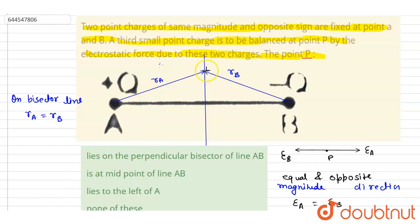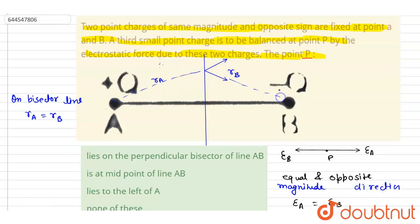Now let's check whether the electric field directions are opposite on the bisector line. Because of charge A (positive), the field is directed away from A. Because of charge B (negative), the field is directed toward B. So the two field vectors end up pointing in the same direction, not opposite directions — they have equal magnitude but are not opposite.